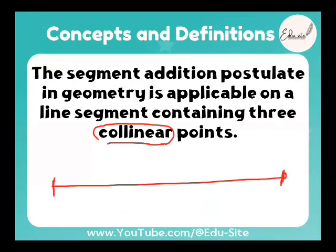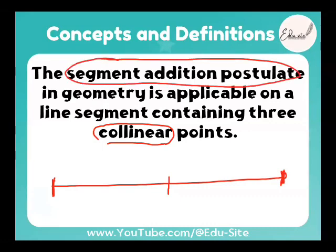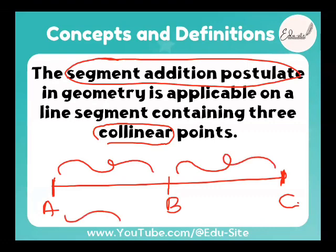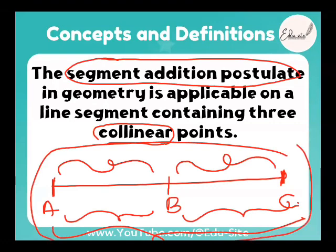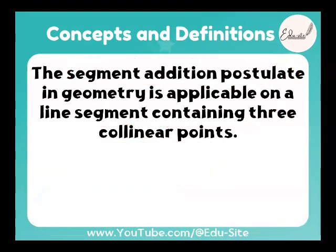Collinear — points that are on the same line. Excellent! So now we are going to deal with the Segment Addition Postulate. If you have three collinear points A, B, C, then the sum of line segments AB and BC gives you the total line segment AC. That is: AB + BC = AC.